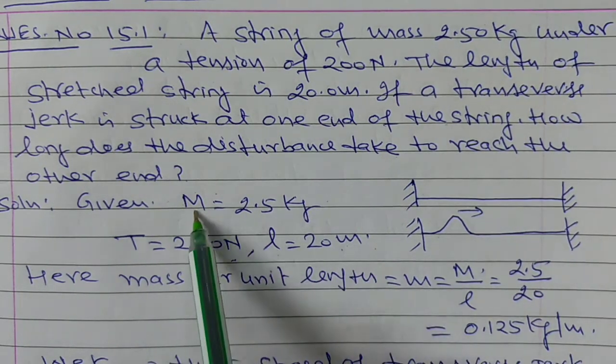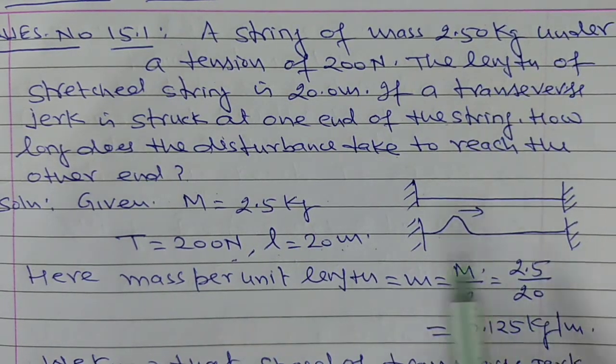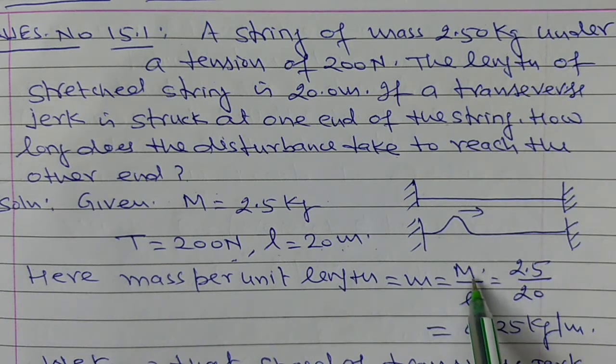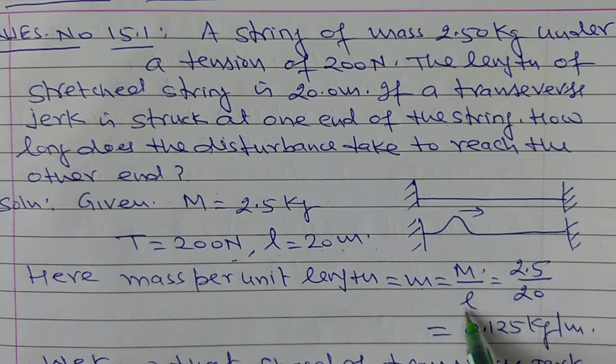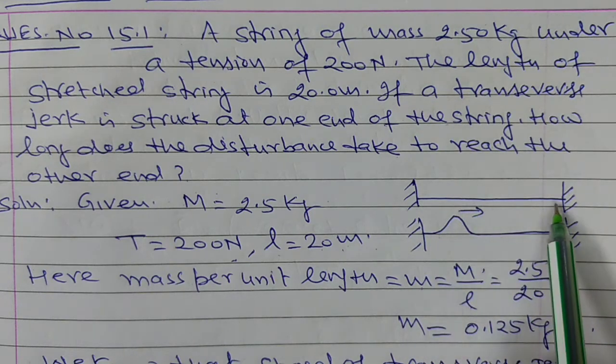Now, here total mass of the string is given and the total length is given. Therefore, mass per unit length of the string is equal to total mass upon total length. And total mass is 2.5 and length of the string is 20. Therefore, this small m is equal to 0.125 kg per meter. So this is the mass per unit length of the string.